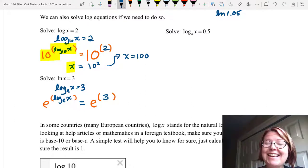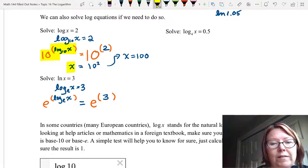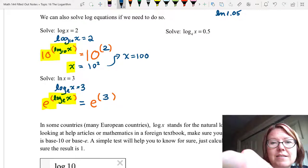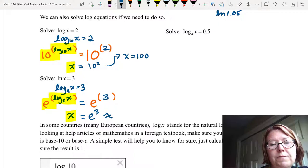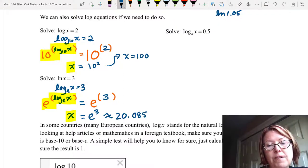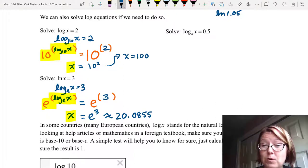So now it reads e to the log base e of x equals e cubed. Well, I have a function and its inverse that's composed together on the left. And this is going to result in just x. So x equals e cubed, which is roughly 20.0855, rounded to four decimal places.